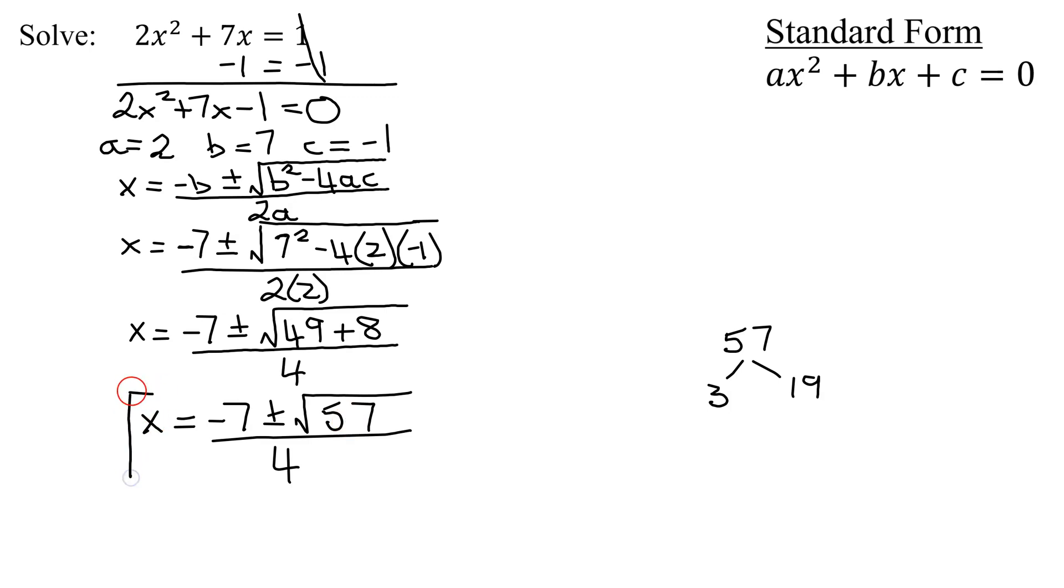So here is my answer. x equals negative 7, plus or minus the square root of 57, all divided by 4. But don't forget, I do have two solutions here. If you're asked to write them out individually, the first one is x is negative 7, plus the square root of 57, all divided by 4. And the second one is x is negative 7, minus the square root of 57, all divided by 4. But normally we write the answer this way, it's a lot more efficient.